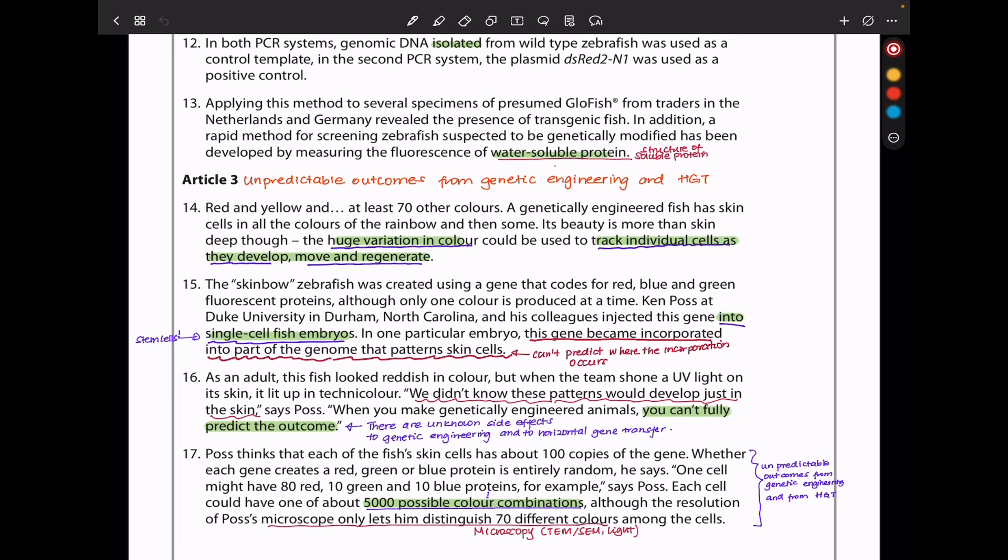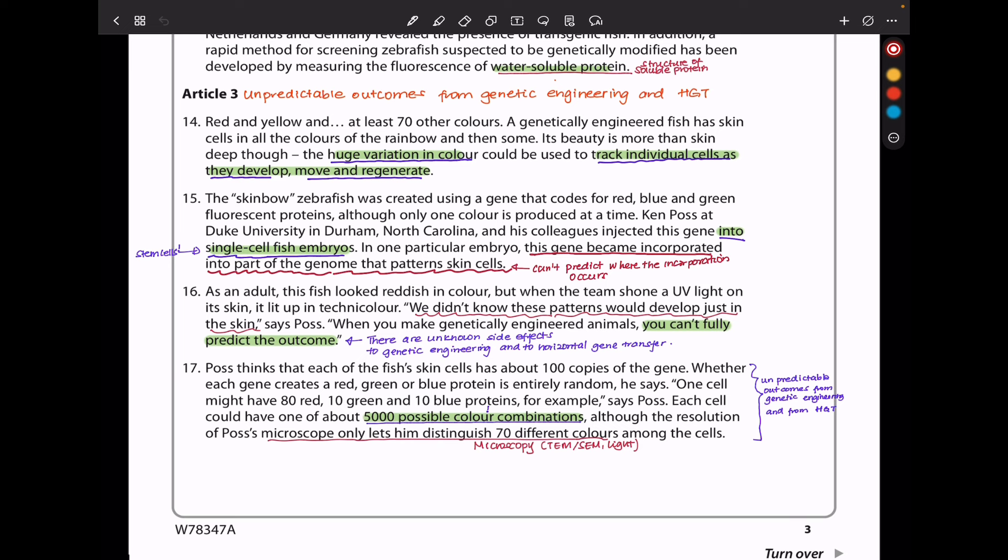Ken Poss at Duke University in Durham, North Carolina and his colleagues injected this gene into single-celled fish embryos. In one particular embryo, this gene became incorporated into part of the genome that proteins skin cells. As an adult, this fish looked reddish in color, but when the team shone a UV light on its skin, it lit up in Technicolor.